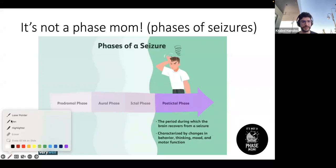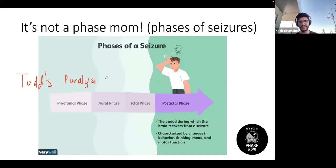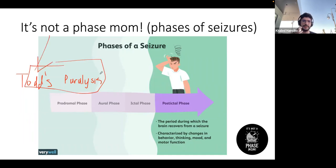Todd's paralysis is when the affected limb goes temporarily paralyzed after a seizure. It can be confused with a stroke because strokes can also cause limb paralysis. However, Todd's paralysis is not permanent — it recovers in a few days. It is one sign that a patient is in the post-ictal phase.